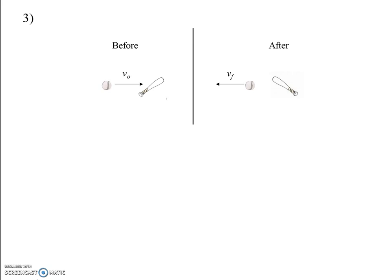Hopefully you got some good results here. You have to remember that we're dealing with vectors again — velocities, momentum, and impulse. So one of the first things you want to do is always establish a positive direction. Most people probably picked to the right, or in this case east as the positive direction. Usually the initial direction of motion is a good choice.